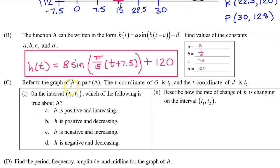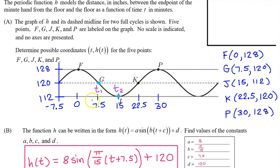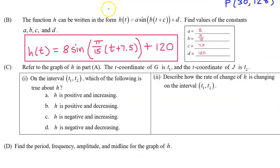Part C. Refer to the graph of h in part A. The t-coordinate of G is t₁ and the t-coordinate of J is t₂. In this case, t₁ is 7.5 and t₂ is 15. On the interval from t₁ to t₂, which of the following is true about h? Is h positive and increasing? Is it positive and decreasing? Is h negative and increasing? Or is h negative and decreasing?